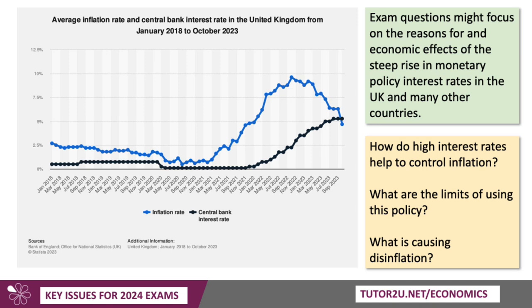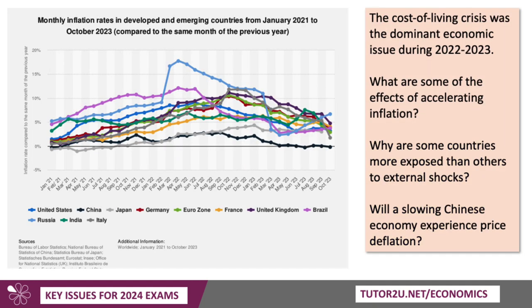And in particular now, what's causing disinflation? You can see in the UK, following the blue line there, that the rate of inflation is falling quite sharply. It's now actually below the level of policy interest rates. So that's an interesting topic — what's going to happen with interest rates in 2024? Will inflation keep falling?